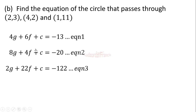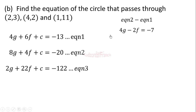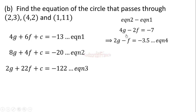We now solve the three equations simultaneously. To eliminate c, which has a coefficient of one throughout, we subtract equation 1 from equation 2: 8g minus 4g gives 4g, 4f minus 6f gives negative 2f, and negative 20 minus negative 13 gives negative 7. Dividing by 2 gives equation 4: 2g minus f equals negative 3.5.